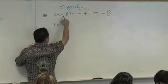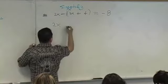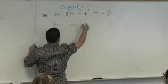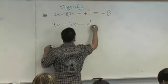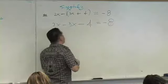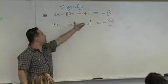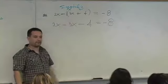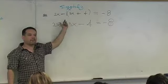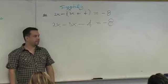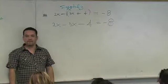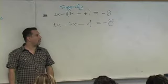So you get rid of your parentheses by using that distributive property. 2x, distribute the negative 1. What's negative 1 times 3x? Negative 3x. What's that negative 1 times the positive 4? Negative 4, and that will equal negative 8. We just got rid of the parentheses by using that distributive property.